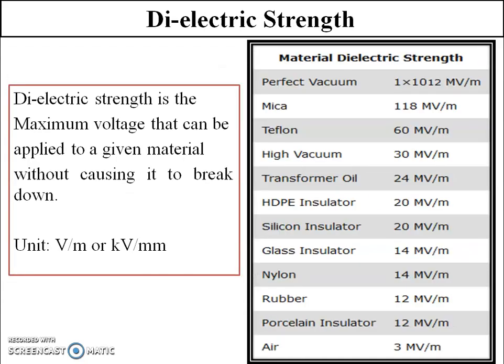Now let's understand dielectric strength. Dielectric strength is the maximum voltage that can be applied to a given material without causing it to break down. If a very high voltage is applied across the capacitor plates, a point may come where the dielectric medium loses its withstanding capacity and the two plates short circuit. The unit of dielectric strength is volt per meter, but mostly we use kilovolt per mm because capacitors are small and the plate separation is in millimeters for general-purpose capacitors.